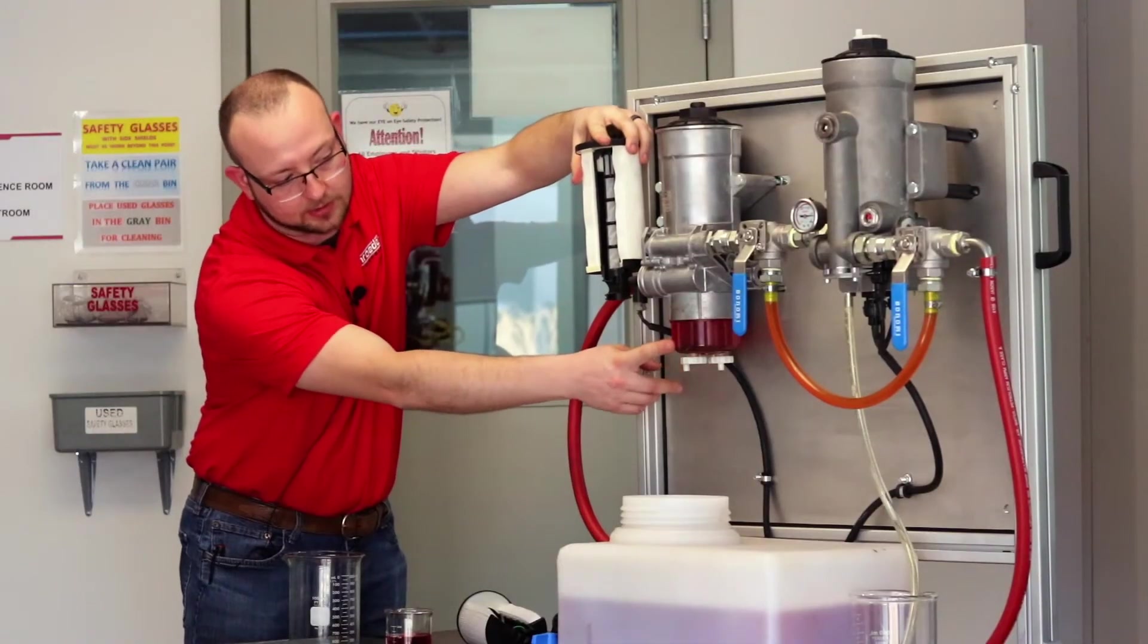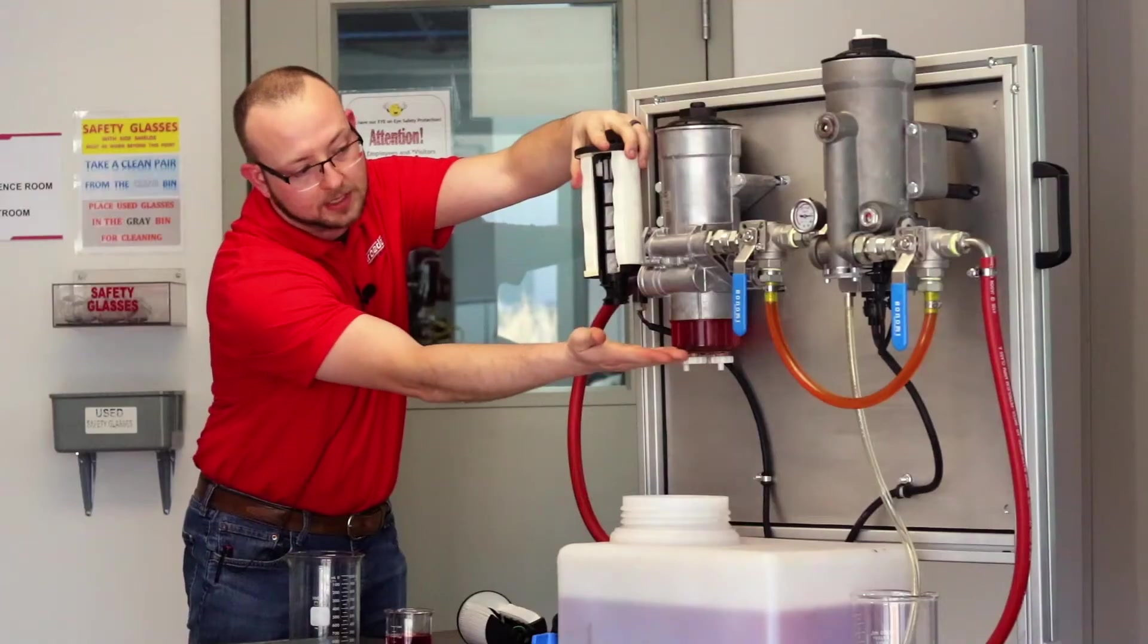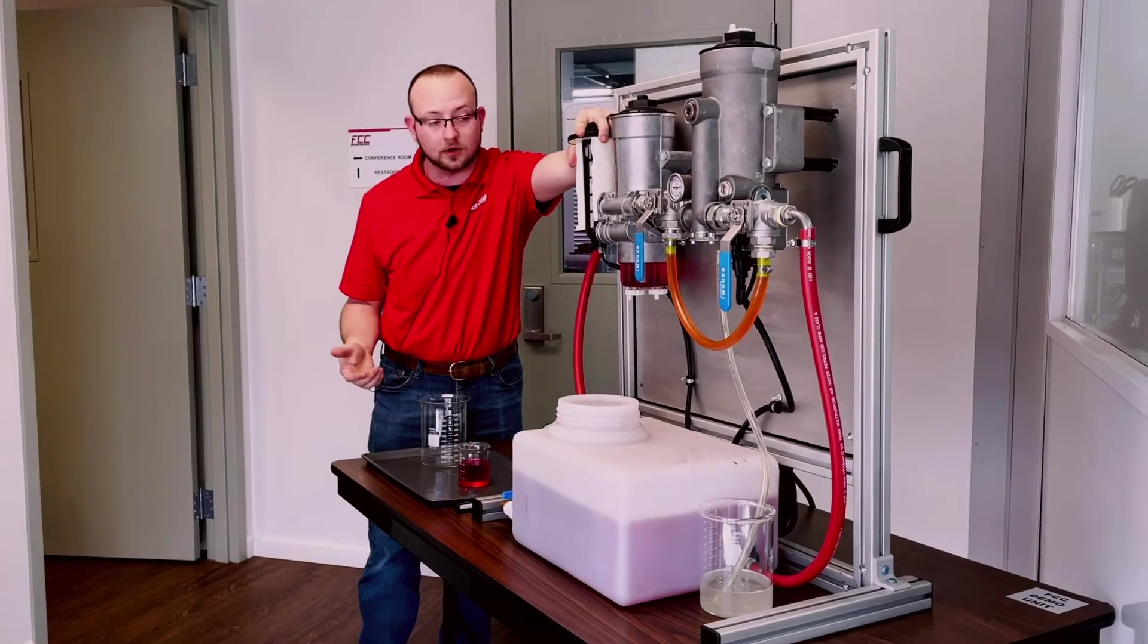which is what you see down here. That clear bowl allows you to see the water level collect and build as this system operates and separates water.